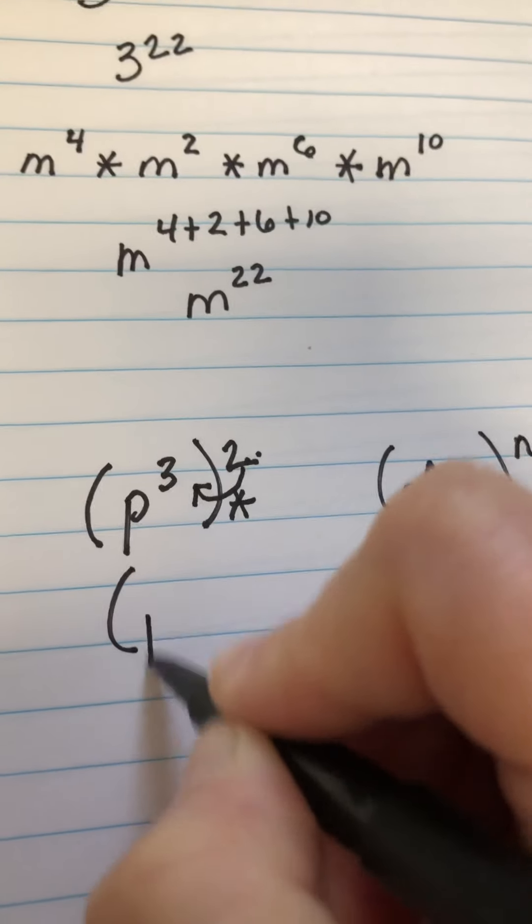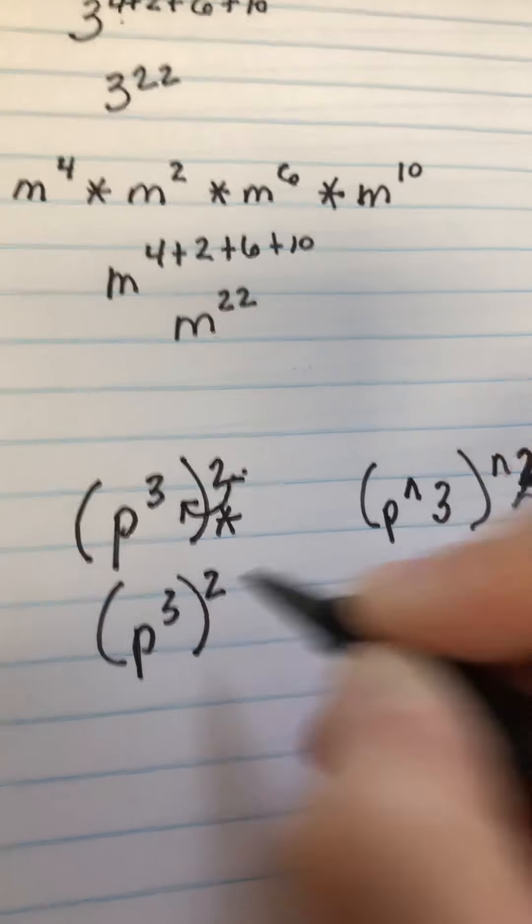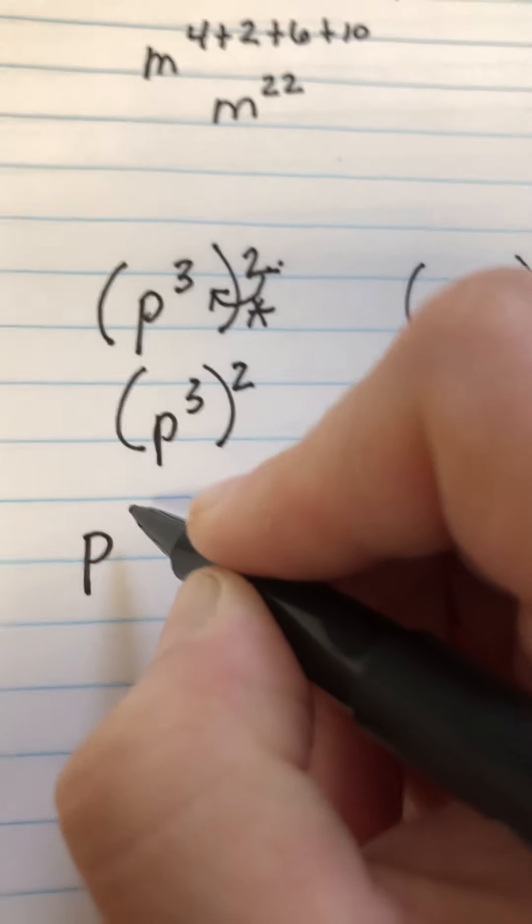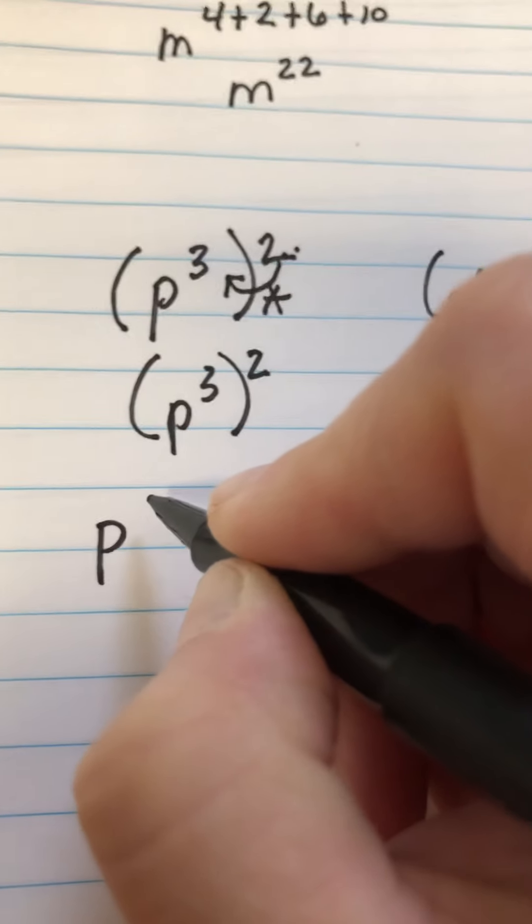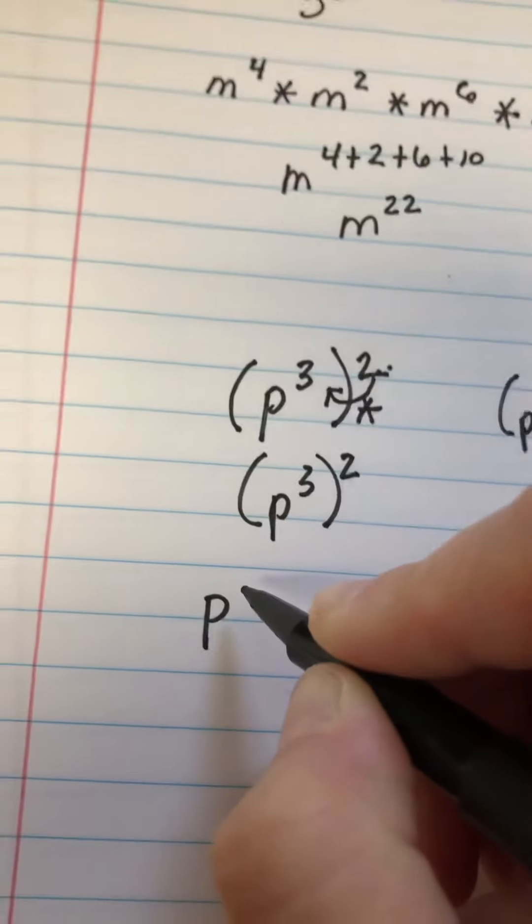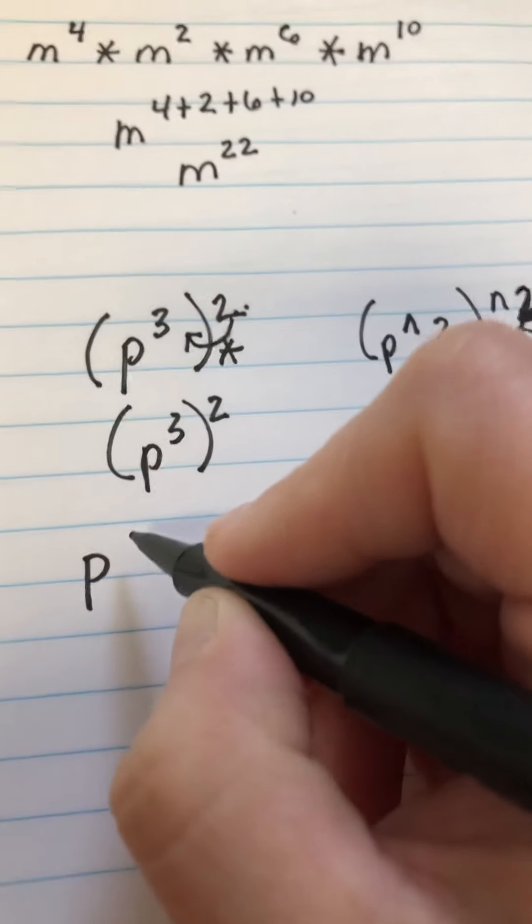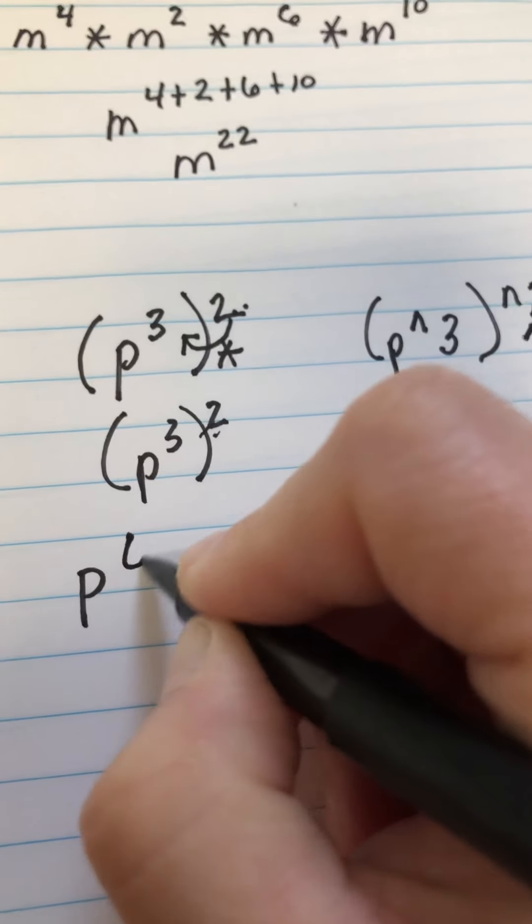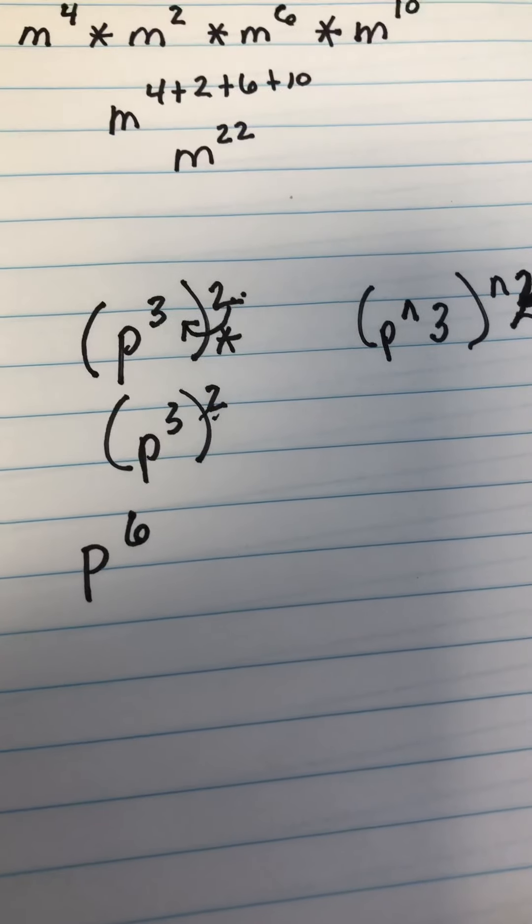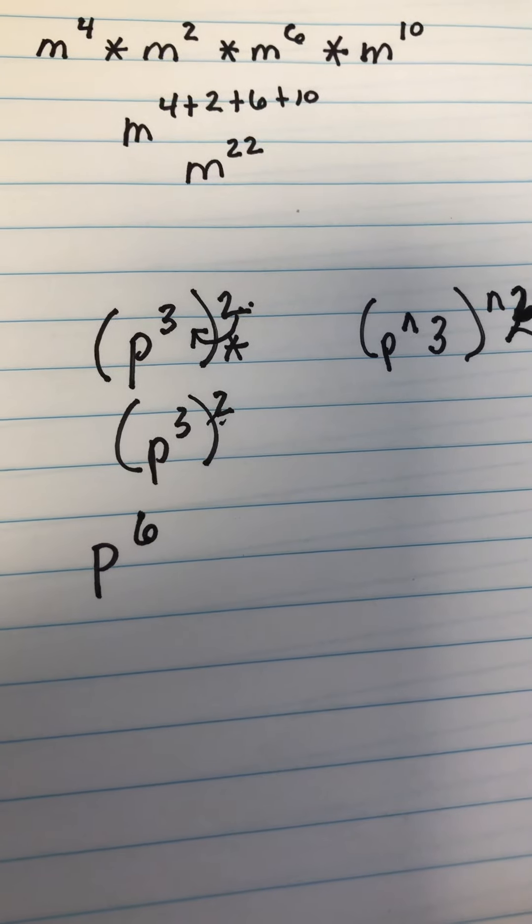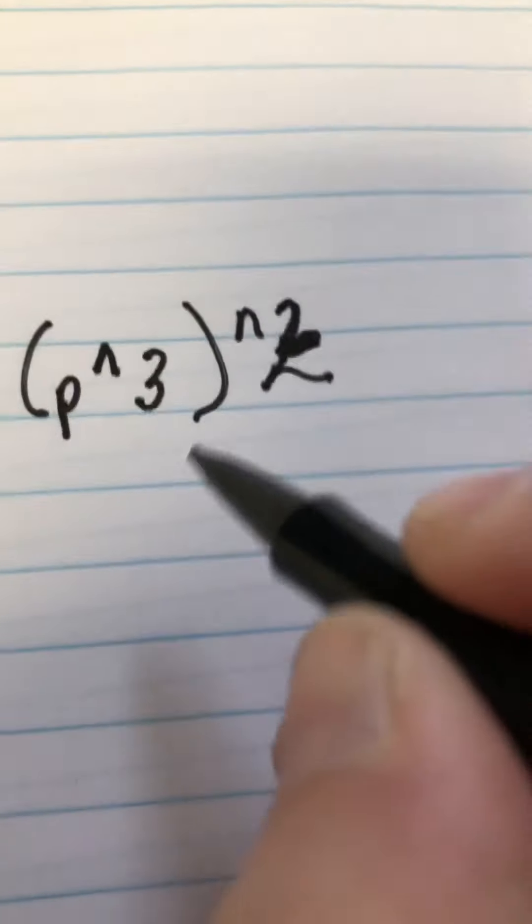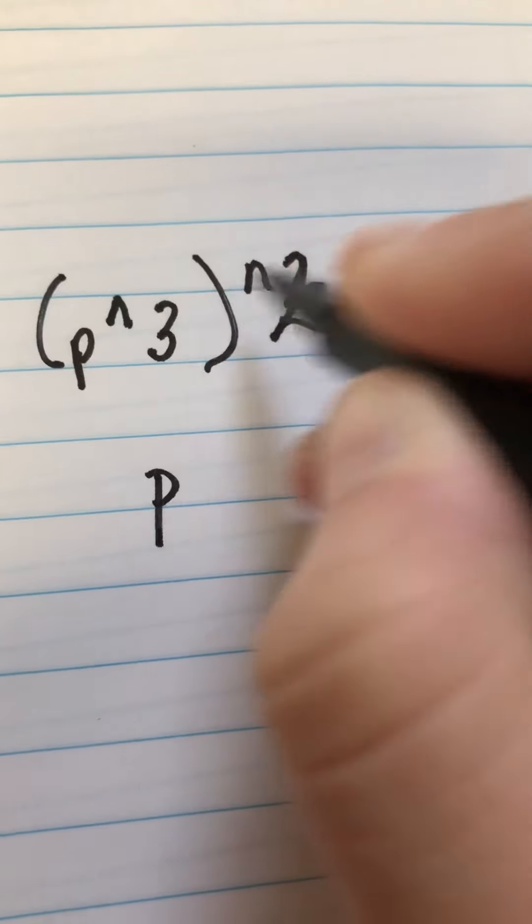P to the 3rd to the 2nd power is actually P—excuse me. So, we take these and we multiply it. 3 times 2 is 6.